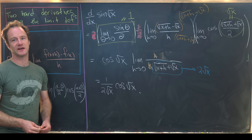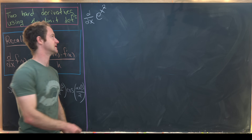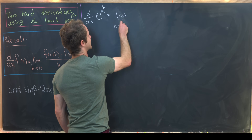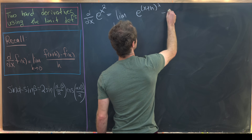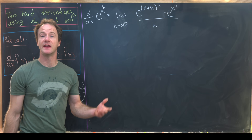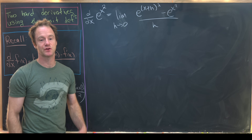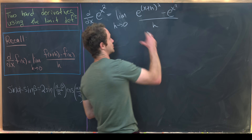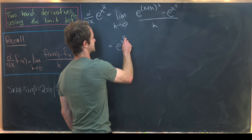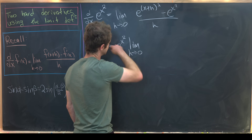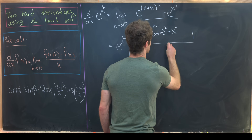For the second example, we compute the derivative of e^(x²) using the limit definition. We need the limit as h approaches zero of [e^((x+h)²) - e^(x²)] / h. Since we expect the answer to involve e^(x²) as a multiplier, we factor e^(x²) out of the numerator, leaving e^(x²) times the limit of [e^((x+h)² - x²) - 1] / h.